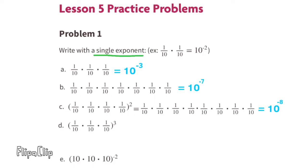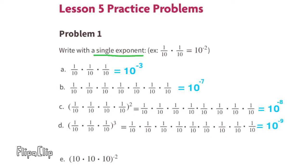Part D: Inside the parentheses we have 1/10 times itself three different times, and outside the parentheses we have to the power of 3. That means three groups of 1/10 times itself three times — a total of nine times. Written as a single exponent, that would be 10 to the power of negative 9.